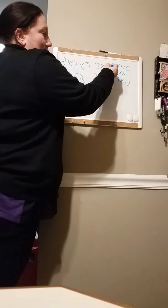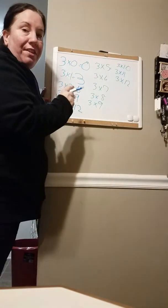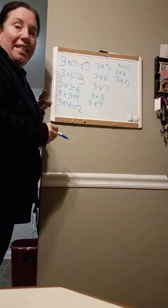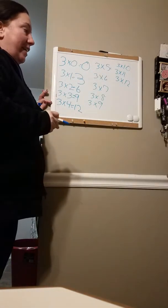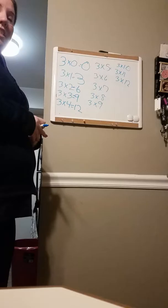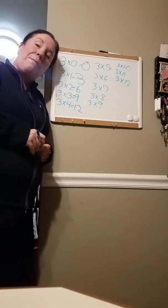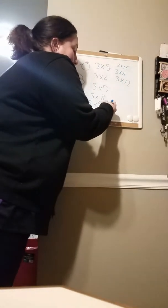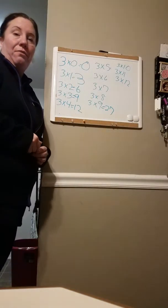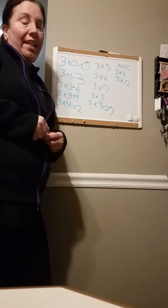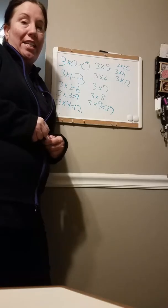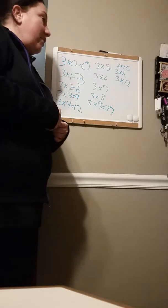Now, three times five is fifteen. Three times six is eighteen. Three times seven is twenty-one. Three times eight is twenty-four. Three times nine is twenty-seven. Three times ten — remember three times one is three? So three times ten is three, but then you add the zero to the end — it's very easy to remember it that way. So it's thirty.